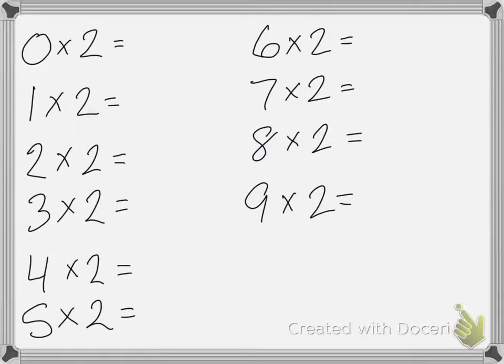Here we have the multiplying by 2 facts. How many pennies are there in one group of 2 pennies? That means there's 2 pennies. If I don't have any groups of pennies, then I would have 0 pennies. 2 groups of 2 pennies would be 4 pennies.